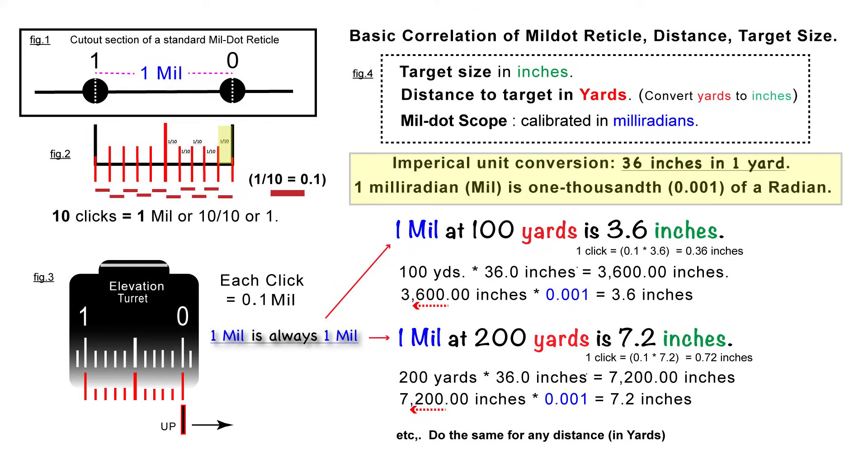Let's say we're at the range and we're shooting at a target 100 yards down range. And we can figure out basically for every one mil, how many inches are we going to move the point of impact on the target. We figure that out by taking 100 yards, multiply that by 36, and we get 3600 inches.